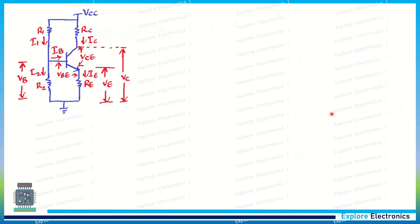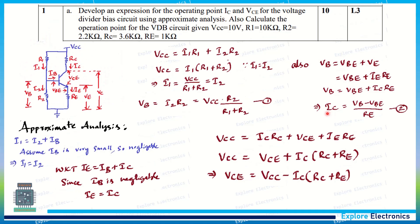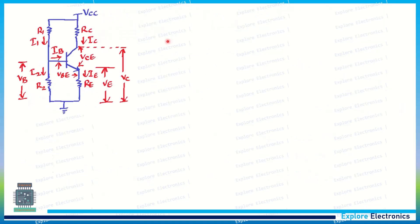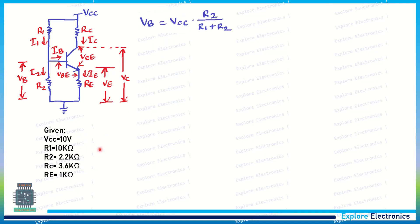Now let us solve the problem given in the question. VCC is 10 V, R1 is 10 kΩ, R2 is 2.2 kΩ, RC is 3.6 kΩ, and RE is 1 kΩ. Let us write the given parameters. Now let me calculate VB first — we know that VB equals VCC times R2 divided by (R1 plus R2).